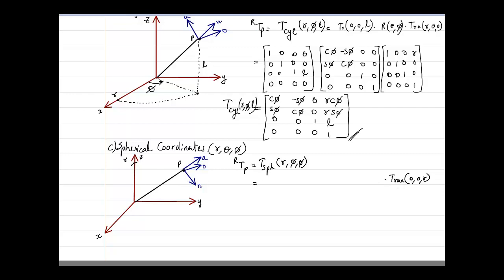The next movement comes in this particular direction. It will move from the Z axis, tilting down, and that angle is theta. So I write it as rotation about the Y axis — we are turning the Y axis in the anticlockwise direction. That is when this r distance, which we have gone in the Z direction, turns by theta. So that is rotation in the Y direction, positive angle theta, because it is anticlockwise when viewed from the Y direction.